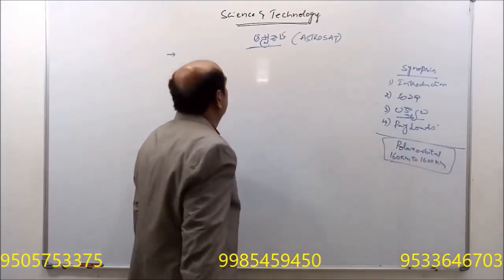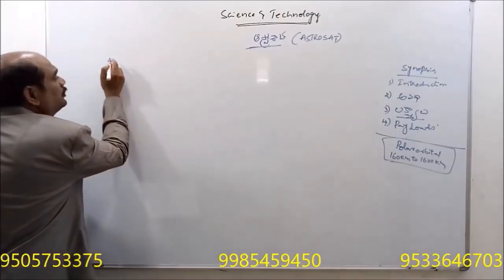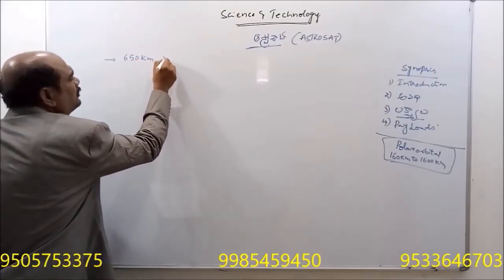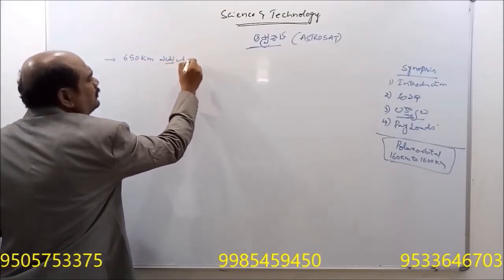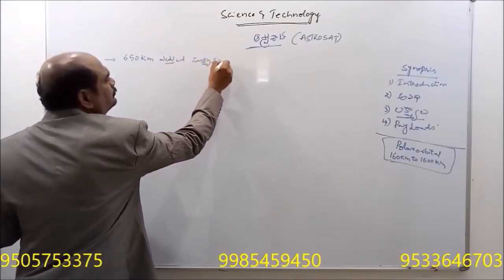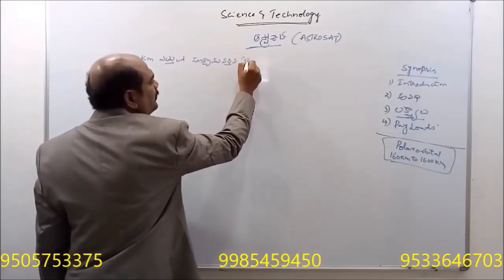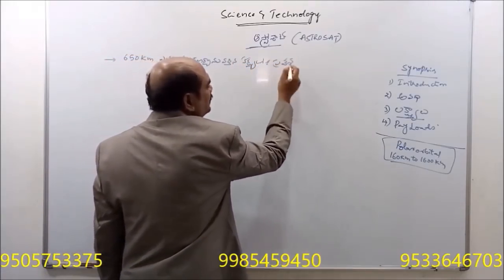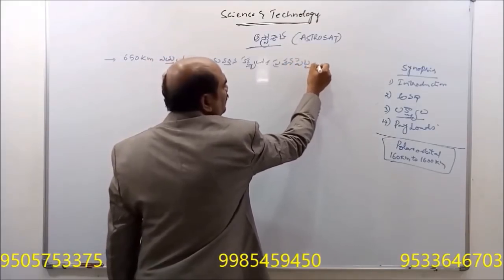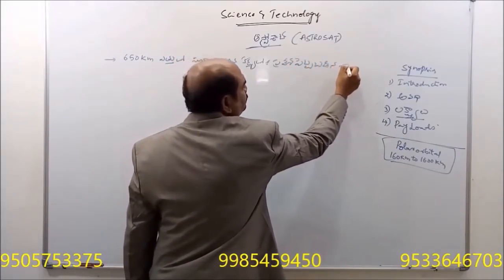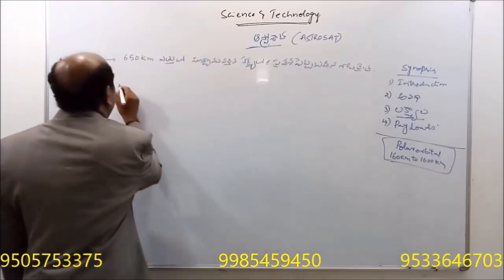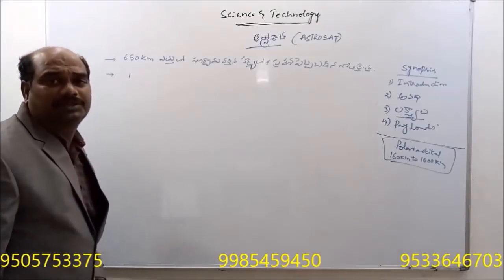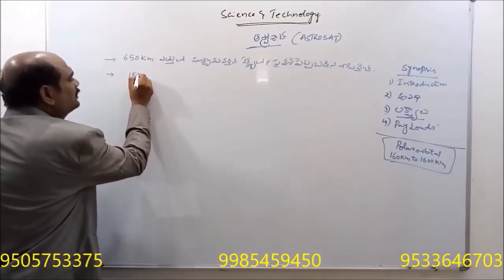What is the orbital range of PSLV-C30? PSLV-C30 launched AstroSat into an orbit of 650 km altitude. Fifteen payloads had an impact. The satellite weighs 1513 kg.